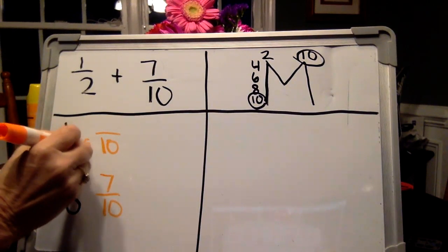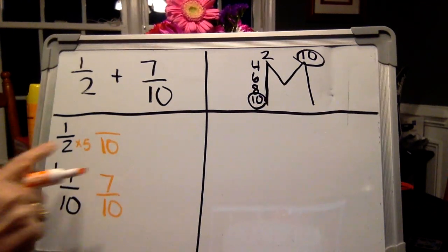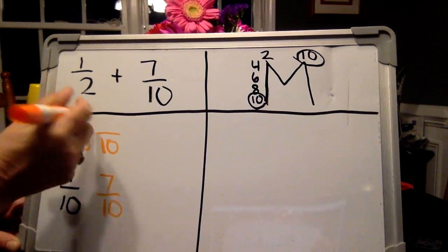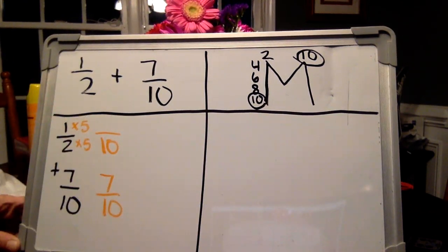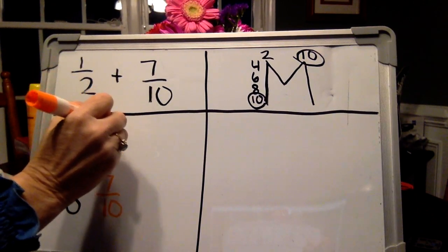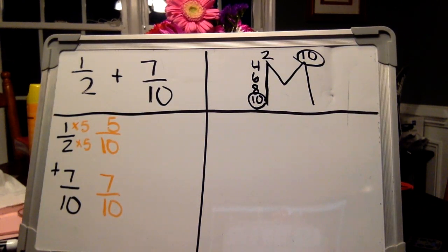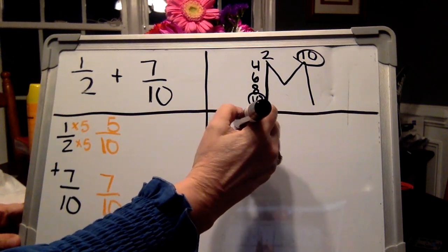Remember, whatever you do for the kid in the bottom bunk, you got to do for the kid in the top bunk. So we're going to times five on the top. One times five is five. Now we have two fractions that have the same denominator. So we are now able to add them together. Our last box.